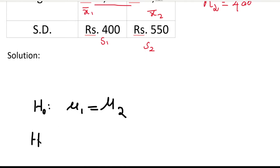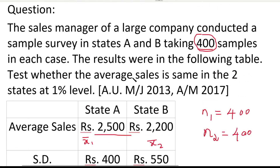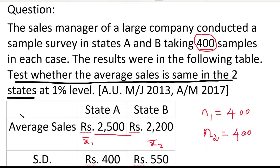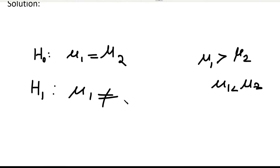Next, write H1. If the question states the first population mean is greater than the second, then H1: mu1 > mu2. If it states less or decrease, then H1: mu1 < mu2. In this problem, the question asks whether average sales is the same in the two states. Since H0 is mu1 = mu2, the alternative hypothesis is H1: mu1 ≠ mu2.